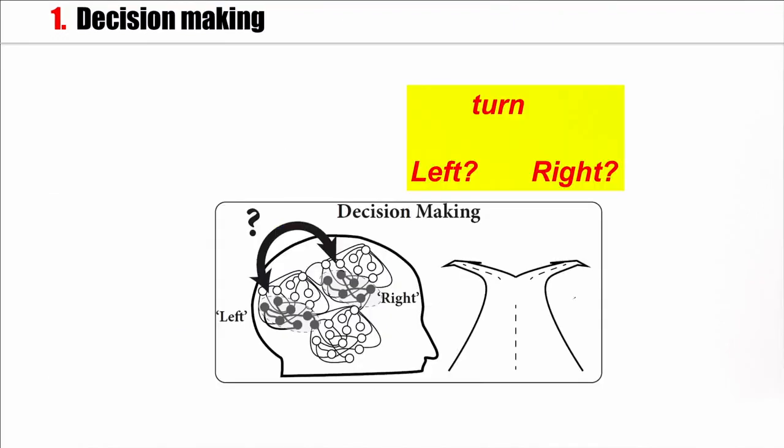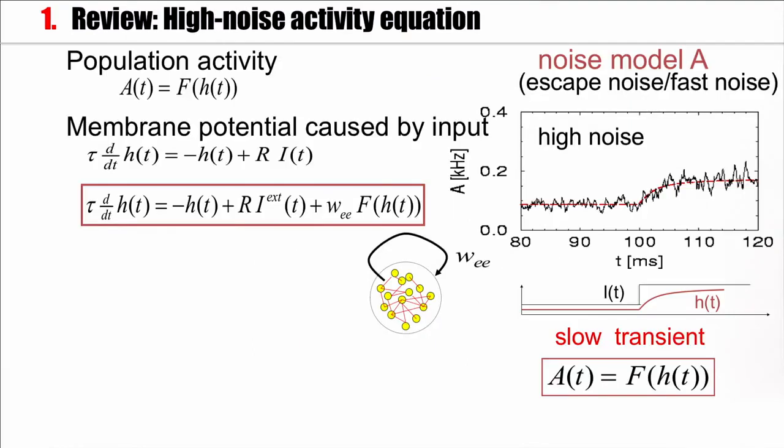We believe that decision making takes place in the brain and it takes place by interaction between different populations. For populations we have already developed a model. We have population activity that follows the input potential and the input potential is given by a differential equation.